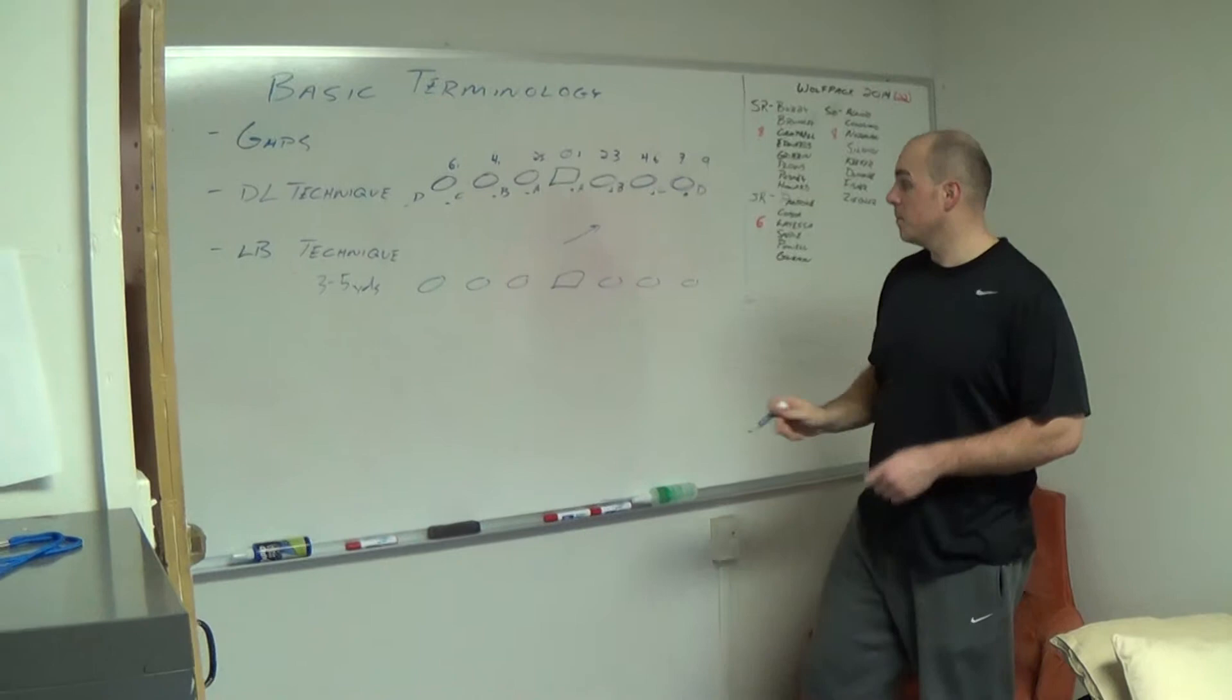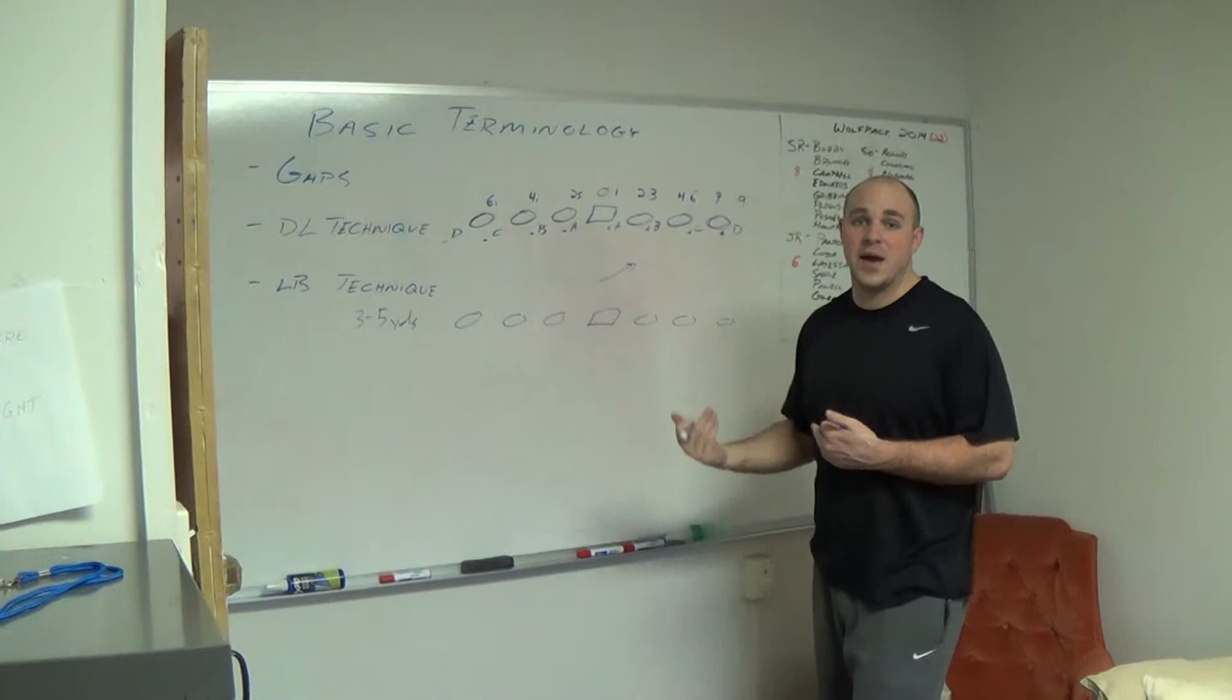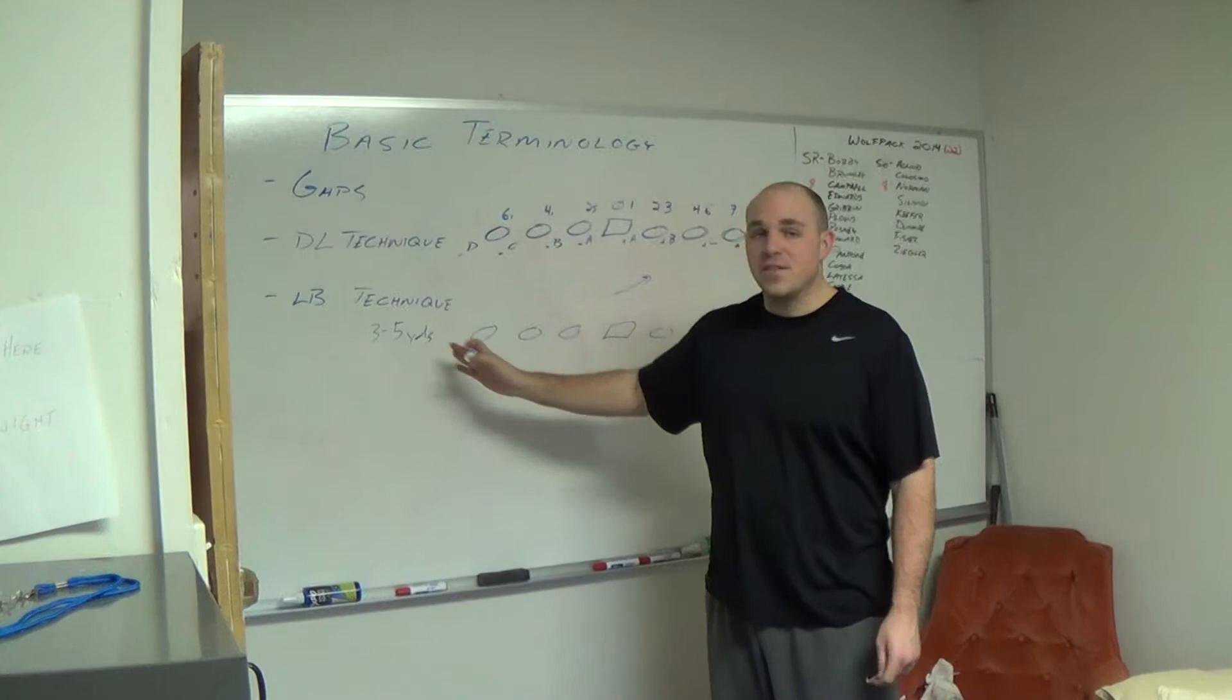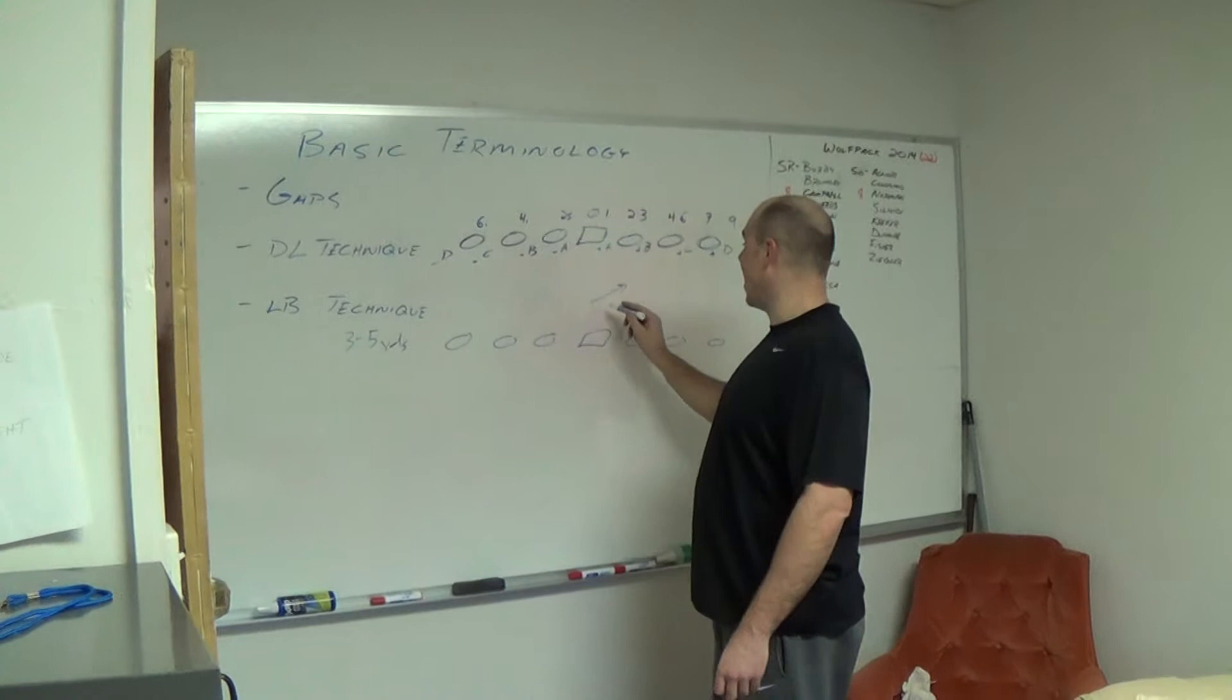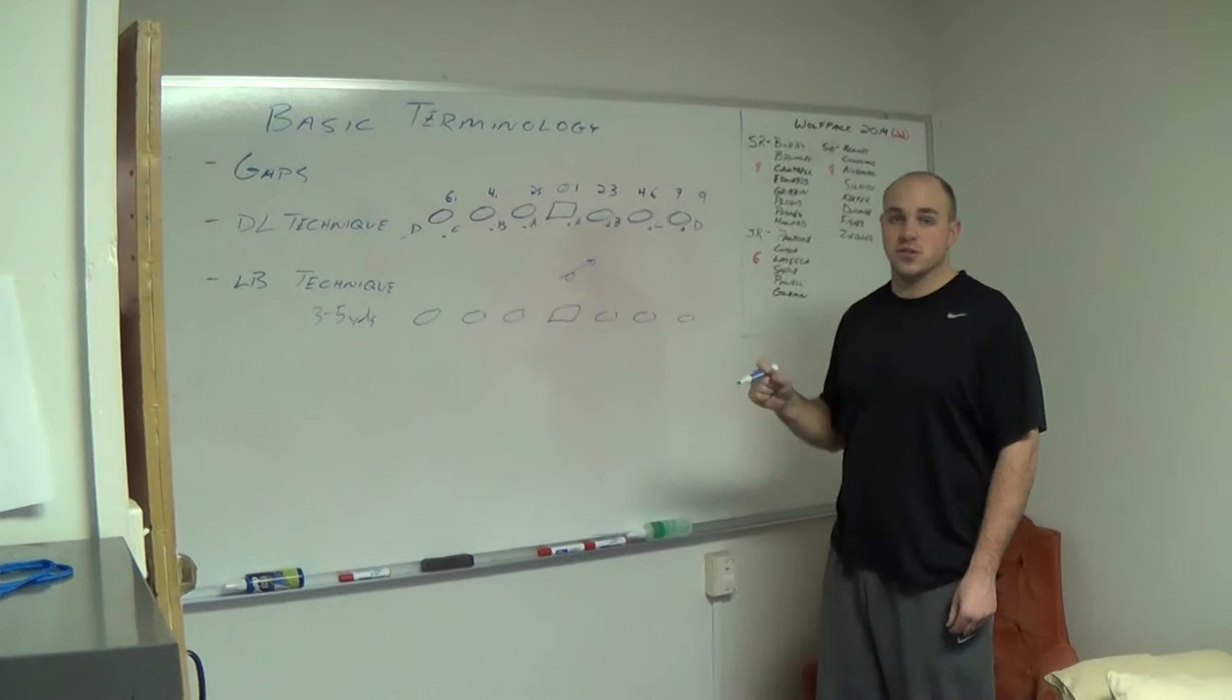The last thing we'll talk about today is linebacker technique, identifying where linebackers are. In order to be identified as a linebacker, they must be at linebacker depth, which is three to five yards away from the line of scrimmage. A zero technique linebacker or head up linebacker is known as a zero technique, just like a nose.